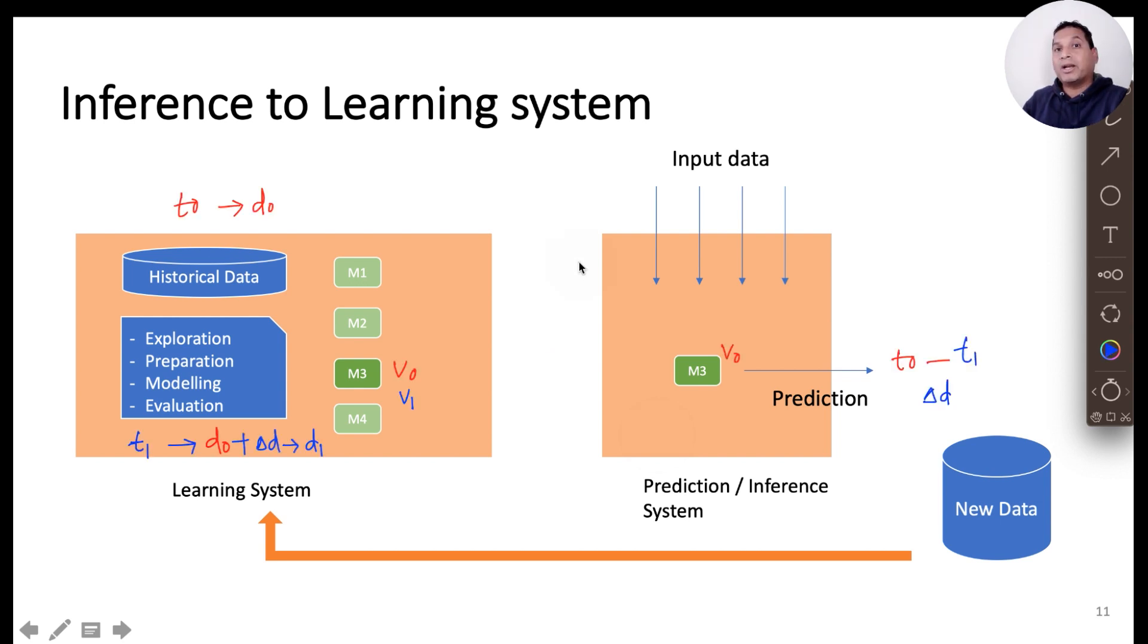Let's say you have built the model at time T0 with the initial set of data D0 and we build the model called V0 which gets deployed onto the inference system. And then the model runs and generates additional data, a delta D, which can be brought into the learning system. And then we add it with the previous set of data D0 and create a new dataset D1 and build a new model V1 which can then be deployed onto the inference system.